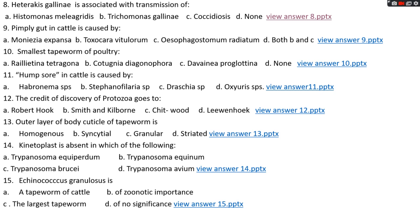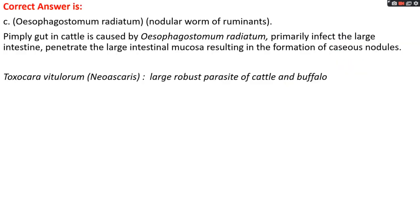Question number nine: pimply gut in cattle is caused by option A, Moniezia expansa; option B, Toxocara vitulorum; option C, Oesophagostomum radiatum; option D, both B and C. The right answer is option C, Oesophagostomum radiatum. It is also known as the nodular worm of ruminants. On rectal palpation of infected cattle, nodules are found on the large intestine. Pimply gut is caused by Oesophagostomum radiatum, which primarily infects the large intestine, penetrating the mucosa and resulting in formation of nodules.